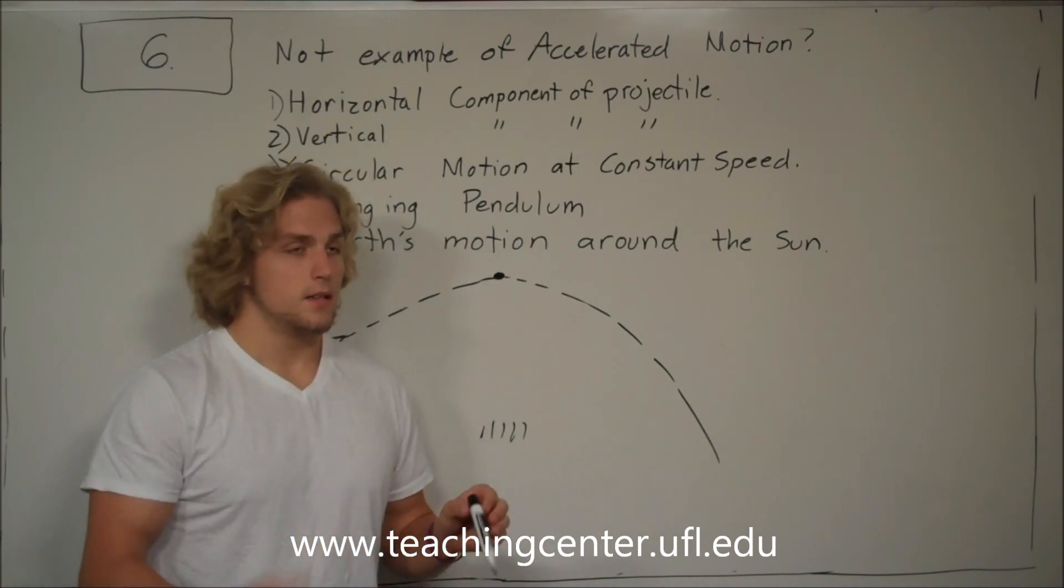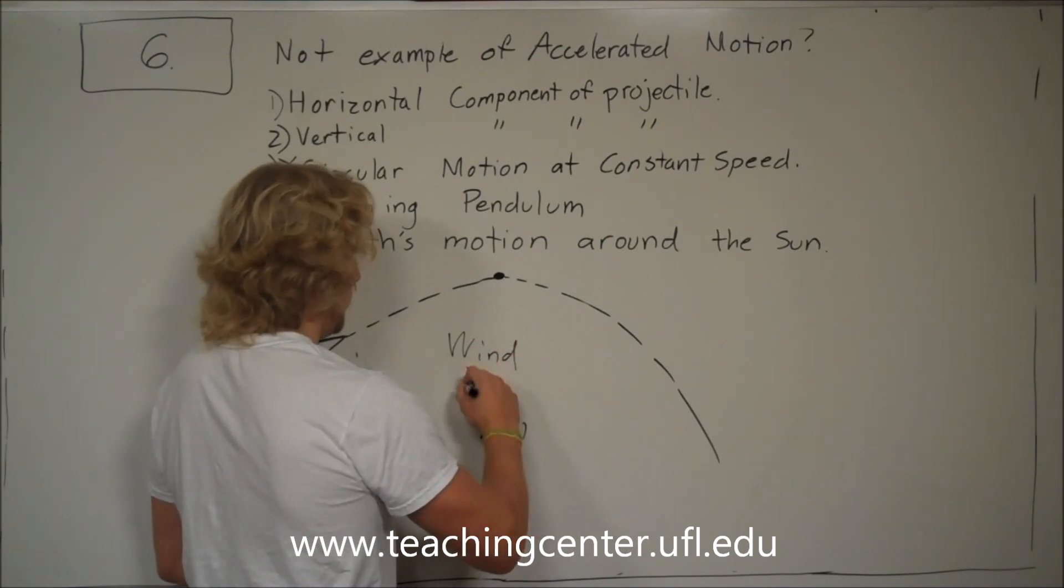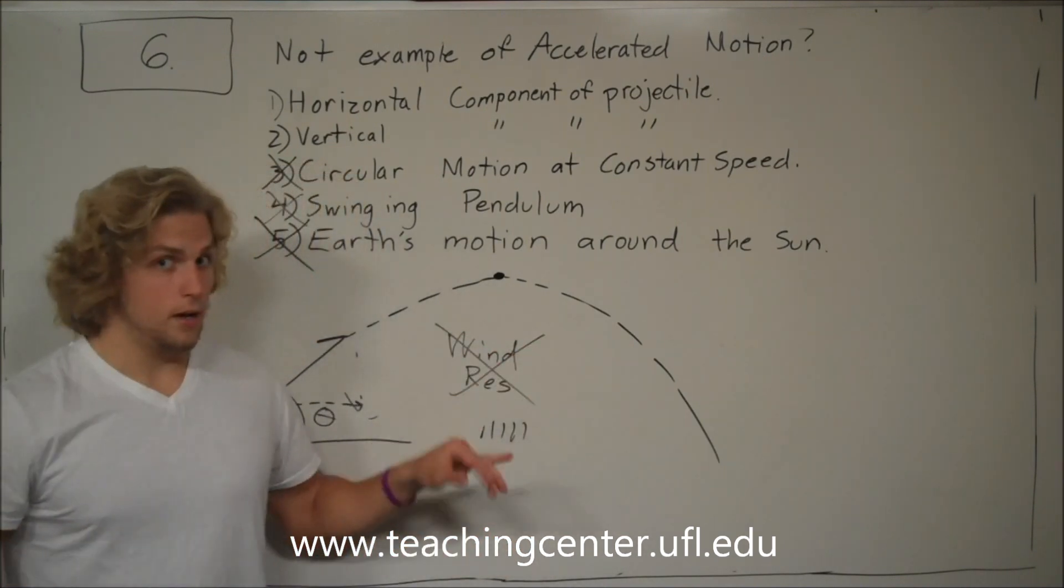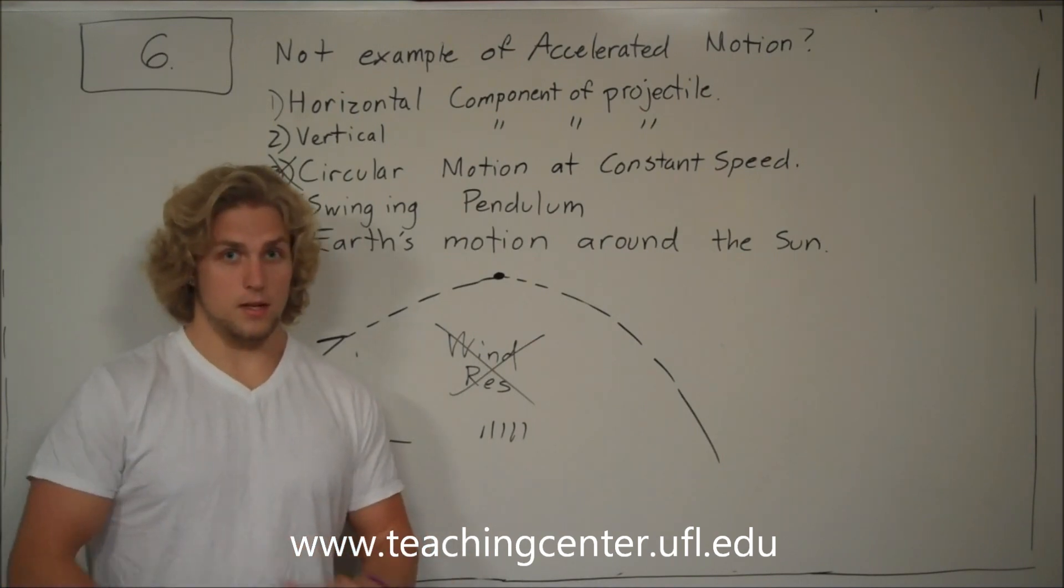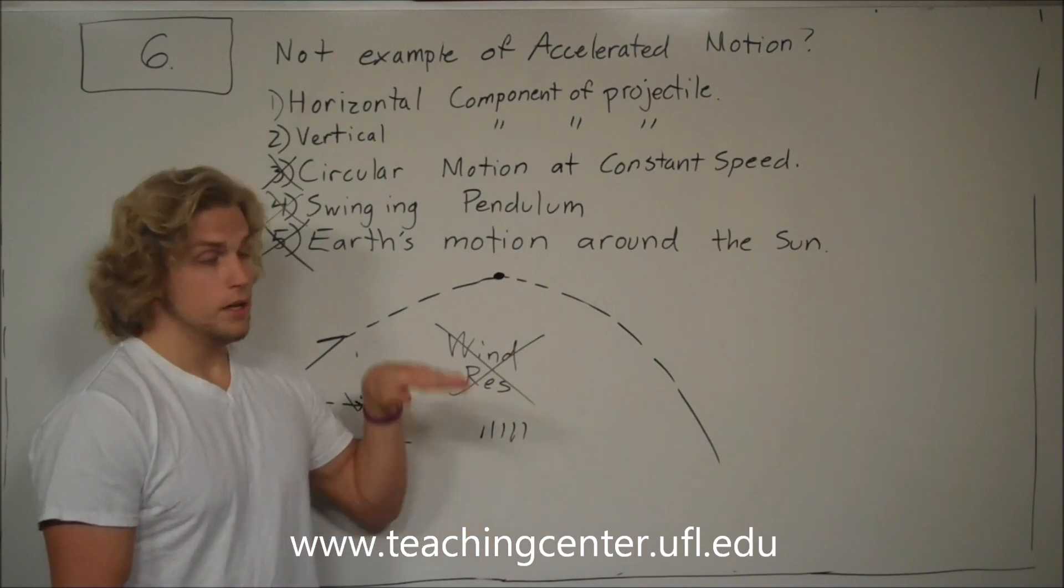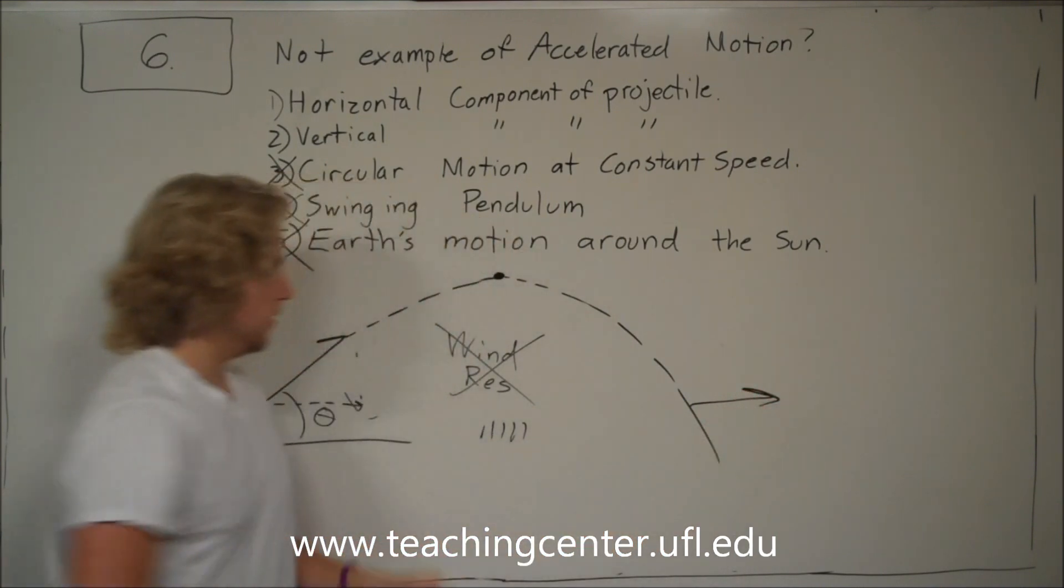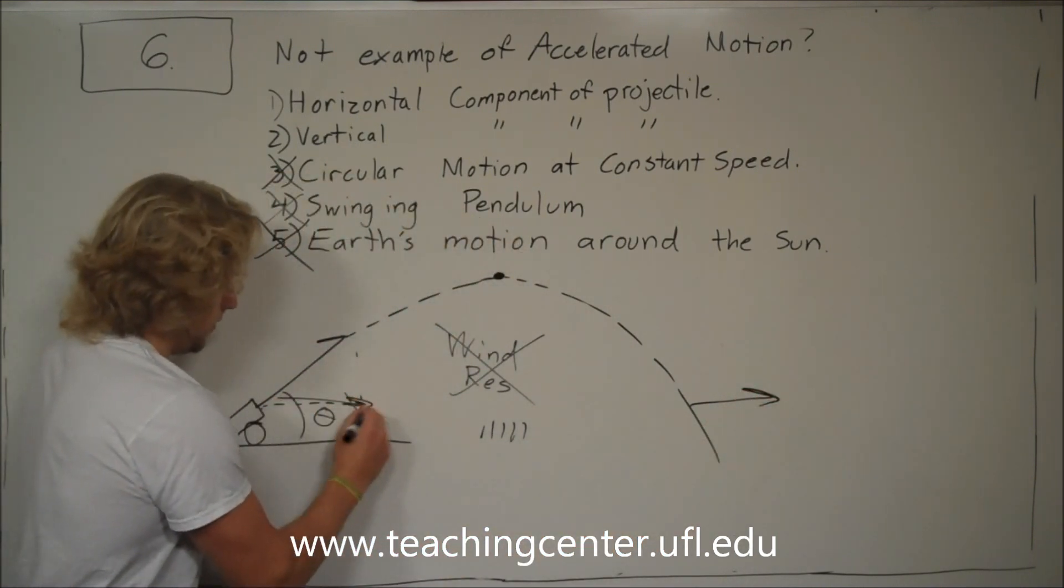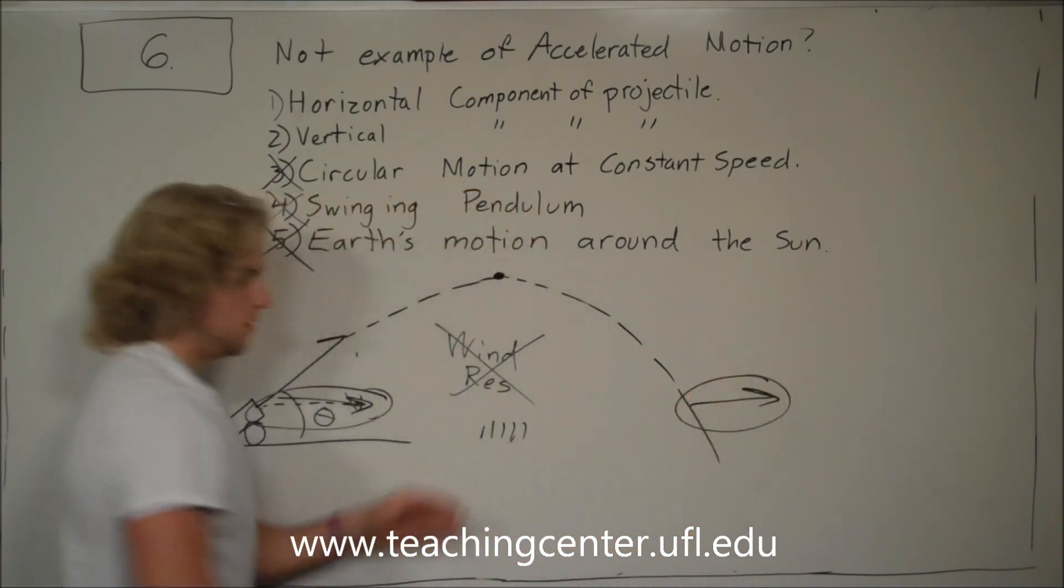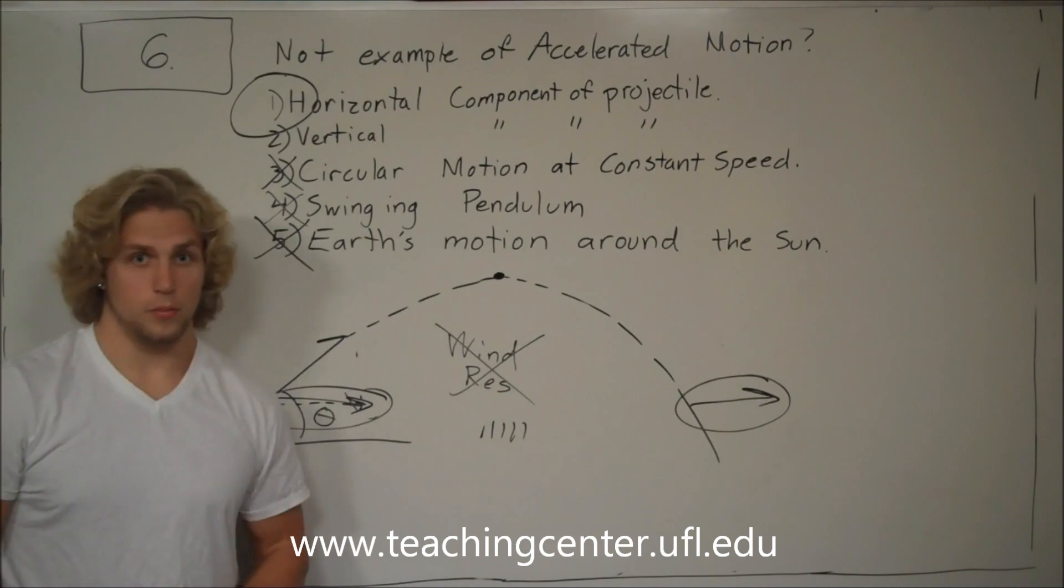In physics 1 and 2, they don't care about wind resistance. They consider it negligible at all times. You never account for wind resistance. So you always think horizontal component of the projectile - there is no acceleration. Same speed here as it is here. So this is the correct answer: horizontal component.